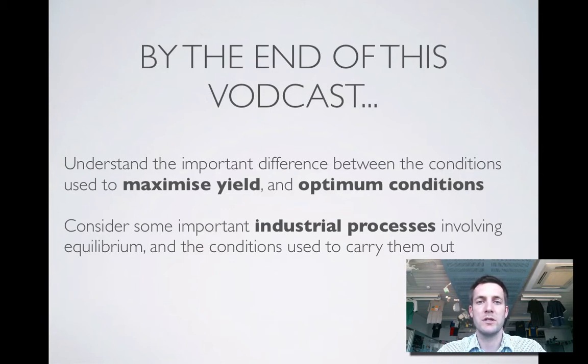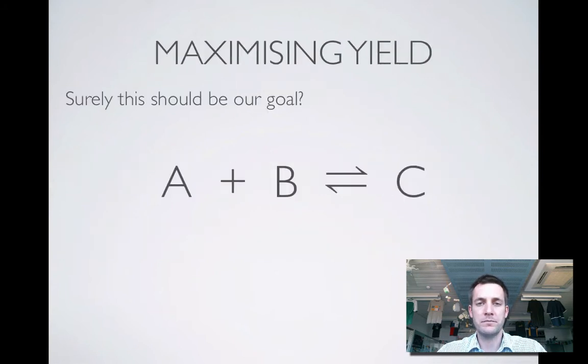So far we've been thinking of equilibrium processes in terms of yield or the position of equilibrium. If you're planning to make chemical C in industry, let's say this is something you can sell, then surely maximizing our yield should be the name of the game. The more C you can make from your equilibrium process, the more money you're going to be able to make. However, things aren't quite as simple as that.